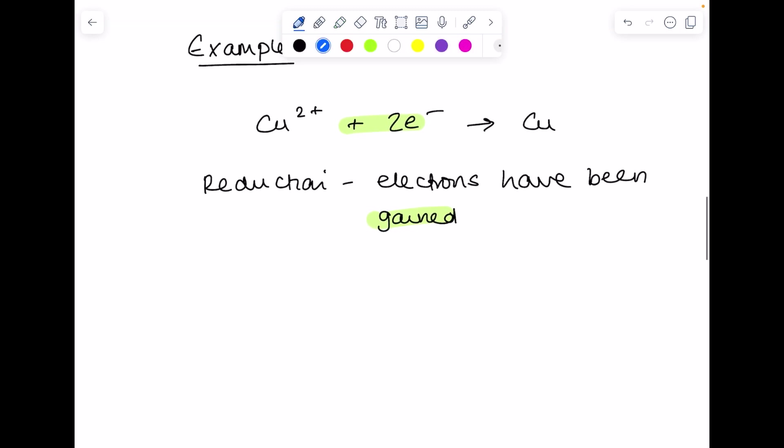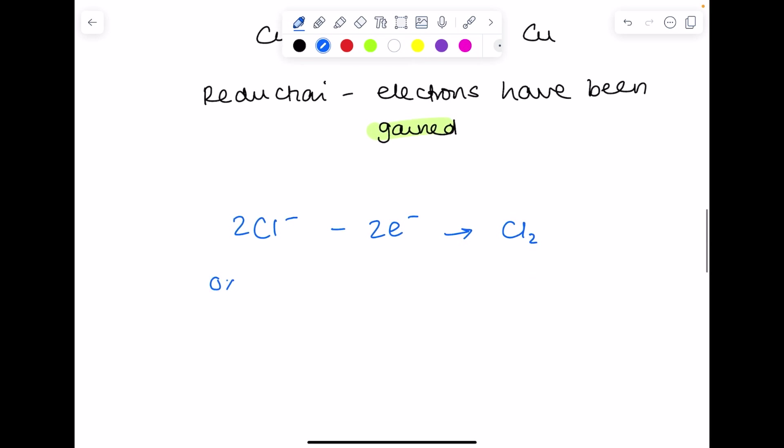What about a second example? What's occurred here? Well, oxidation. Why? Electrons have been lost. Again, that's clear to see.